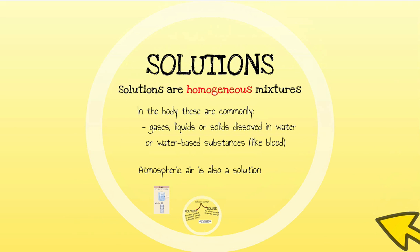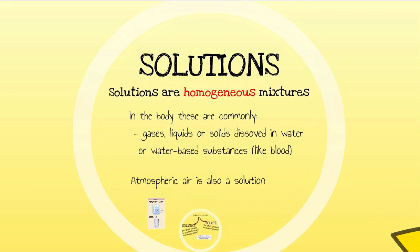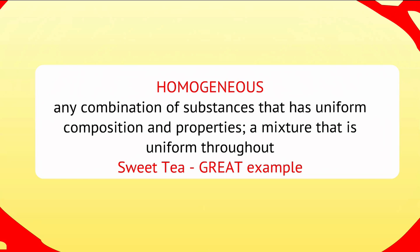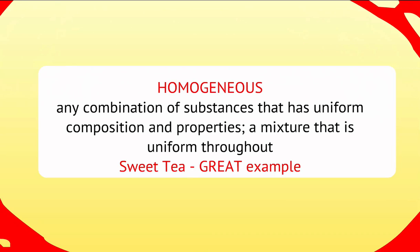A solution is a homogeneous mixture in the body. These are commonly things like gases, liquids, or solids dissolved in water or water-based substances. Blood, as much as it doesn't look like water, is a mostly watery substance with other things dissolved in it. Atmospheric air also happens to be a solution. Homogeneous is basically any combination of substances that has a uniform composition and property throughout — in other words, it's mixed well. You can't really unmix it, and sweet tea would be a great example of a homogeneous solution.